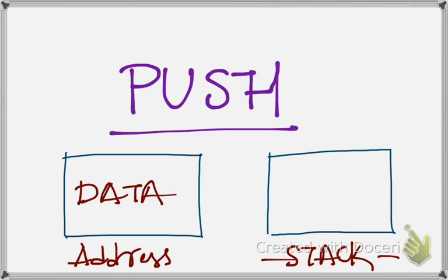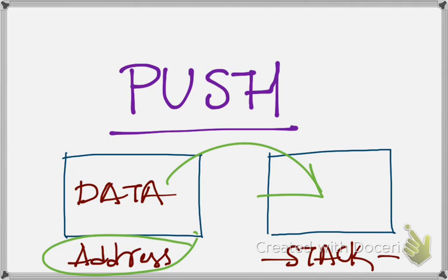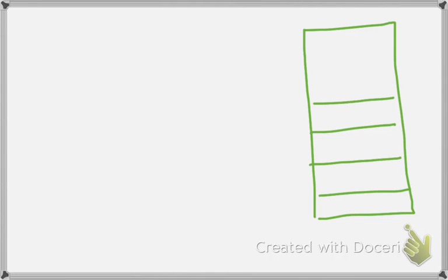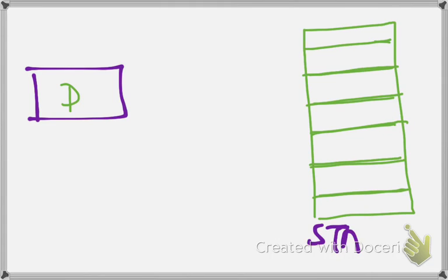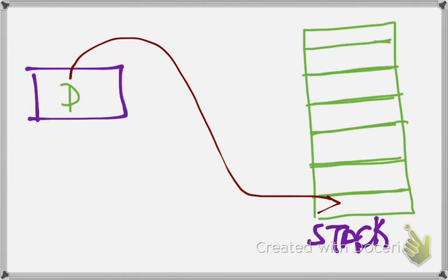PUSH is that operational code that transfers or copies data from an address to the stack. Consider a RAM's memory — the stack — as a collection of addresses. Whenever we have data in some external address to be copied into the stack, we push it, and when we push the data, the data gets copied into the stack. Before being copied, the stack pointer, which is denoted by SP, is incremented by 1.